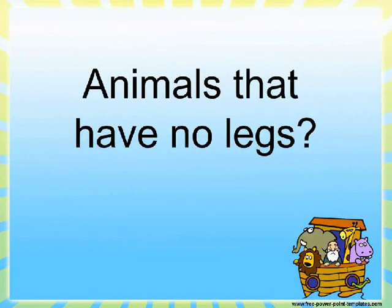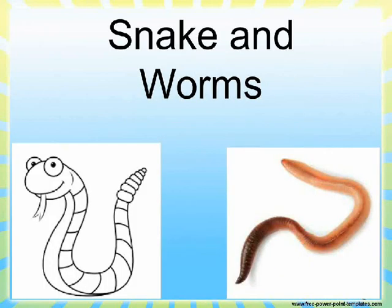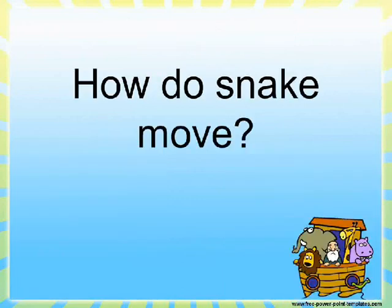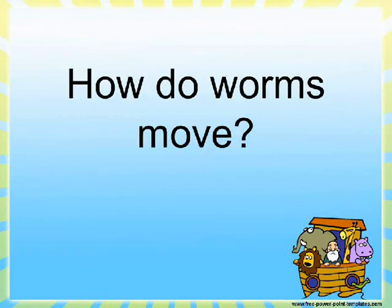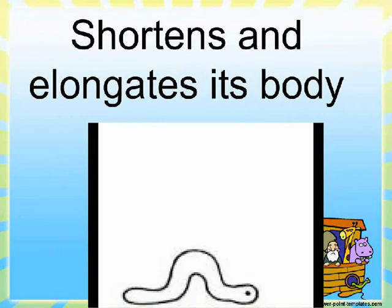Animals that have no legs — snake and worms. How do snakes move? By curving and straightening their body. How do worms move? By shortening and elongating their body.